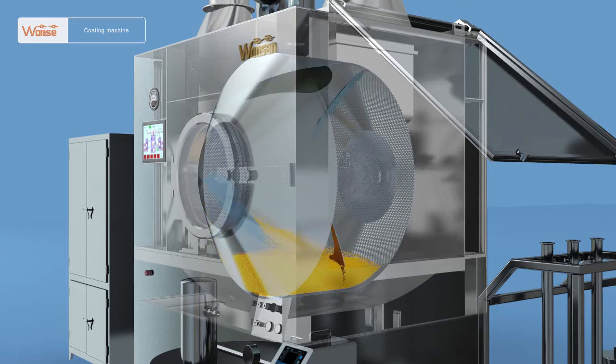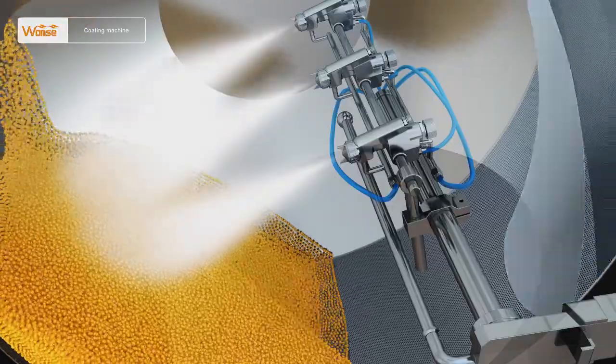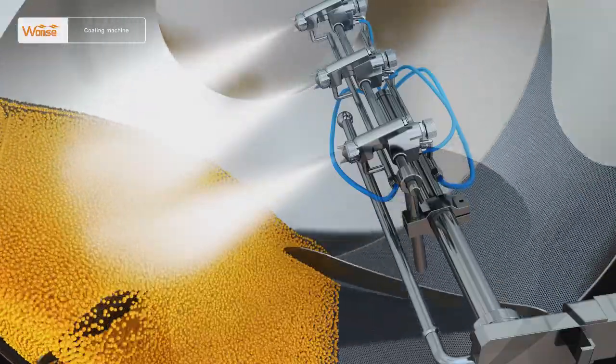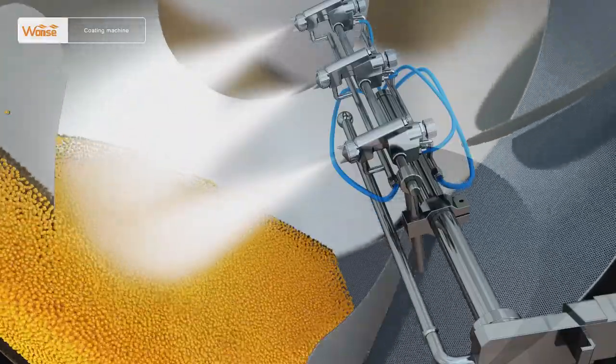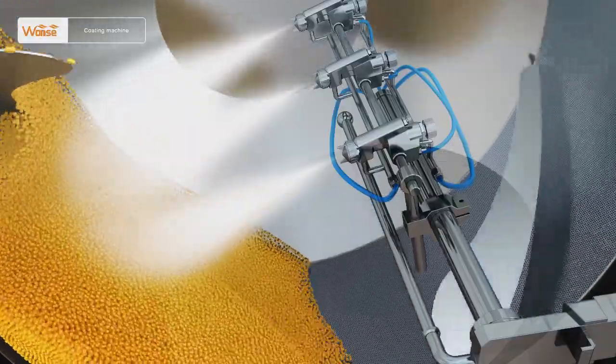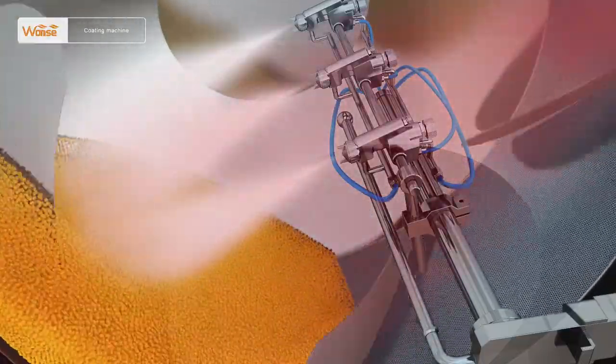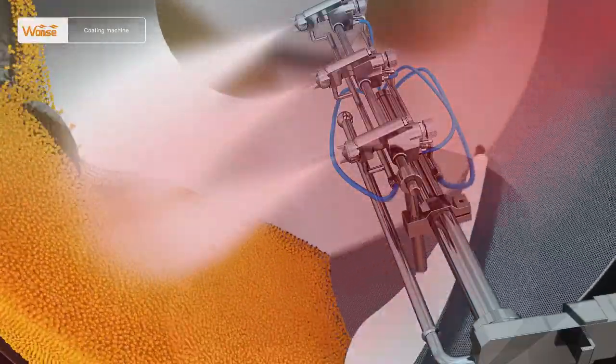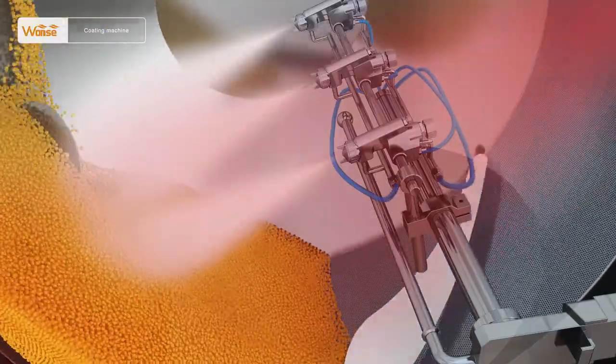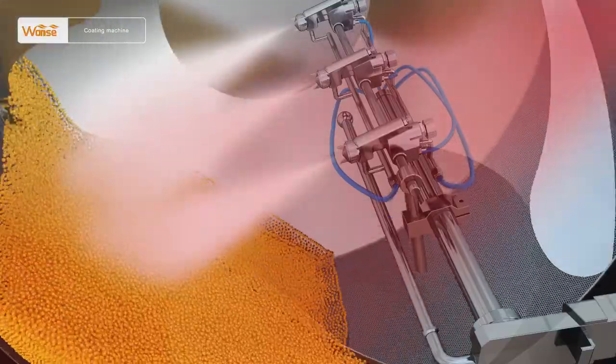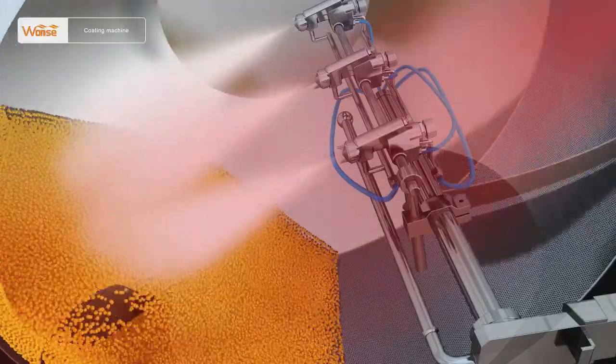Under the action of the streamlined diversion plate, the tablets or pills to be coated make complex movements continuously in the clean cluster coating drum with holes. The liquids are sprayed continuously in an organic and even way. The hot air passes the tablets or pills to be coated and is then discharged from the bottom.